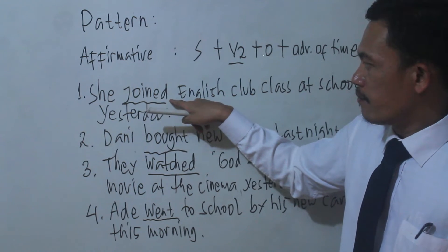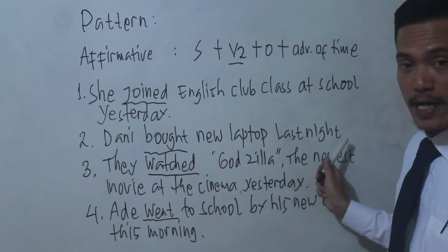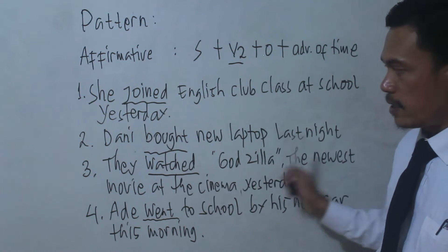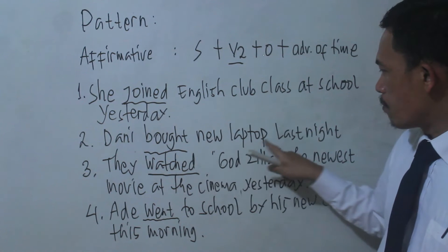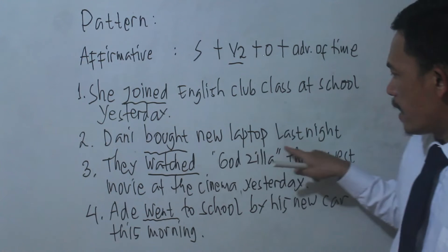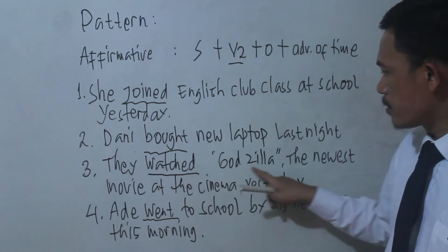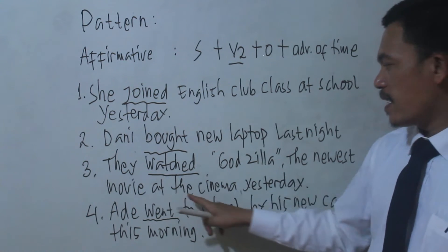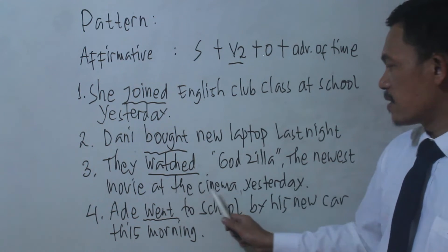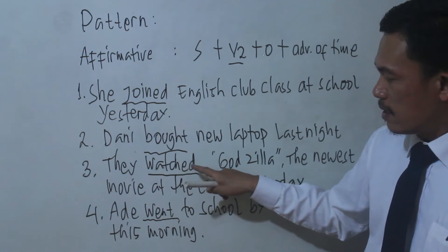Pay attention — 'joined' should be verb 2. Number two: 'Danny bought a new laptop last night.' — Danny membeli laptop baru semalam. Number three: 'They watched Godzilla, the newest movie, at the cinema yesterday.' Pay attention that 'watched' is verb 2 in the simple past tense.